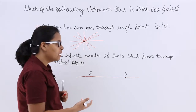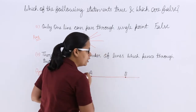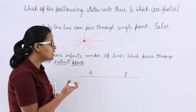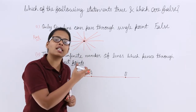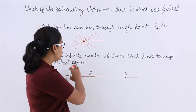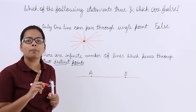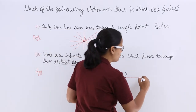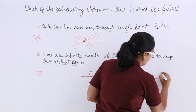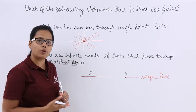If you try to pass a number of lines through two distinct points, you will see that you keep drawing the same line again and again — you are not getting a different line. That's why through two distinct points there cannot pass infinite number of lines. There can pass only one unique line.